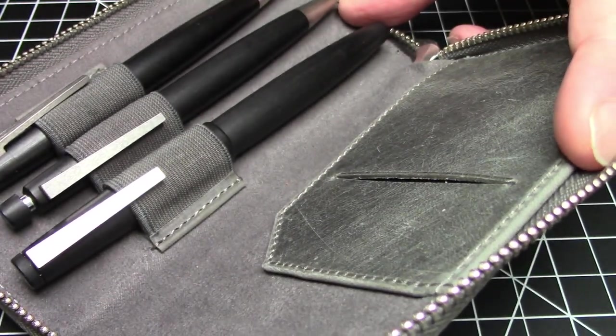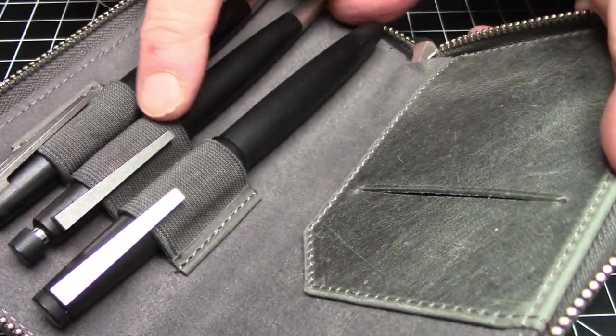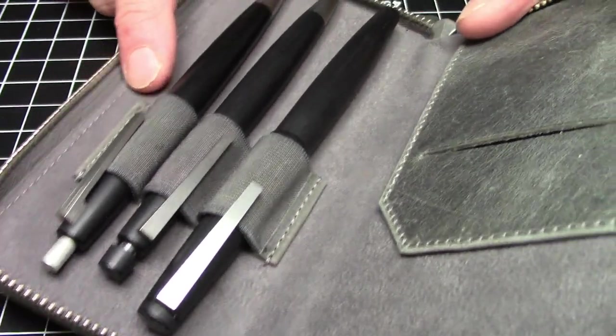On the inside you have a holder you can put a little notebook and a business card slot. So the one side can have some paper materials and then you have three elastic bands that can hold three writing instruments.